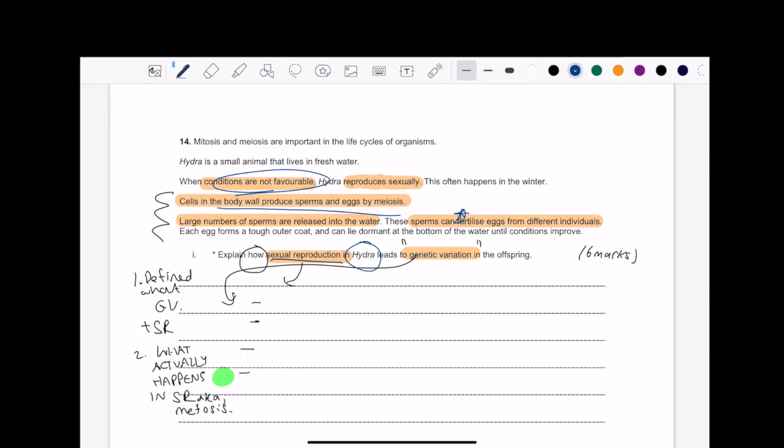The point you're going to say about Hydra now is the sperm from one Hydra can fertilize an egg from another Hydra. Two Hydra can have different alleles, a.k.a. genetic variation.